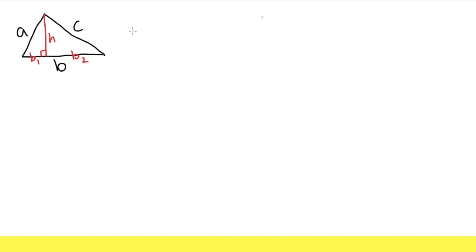The area is 1/2 base times height H. If we can write H in terms of A, B, and C, then we will be in good shape. That's the key. Let's see what we can do from this picture.